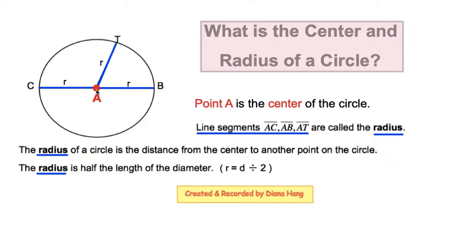If I start again at point A, the center of the circle, extending all the way to point T, that length is also called the radius. If I start again at the center of the circle, point A, and extend all the way over to point C, that length is also called the radius.